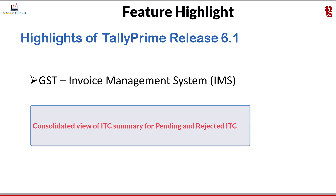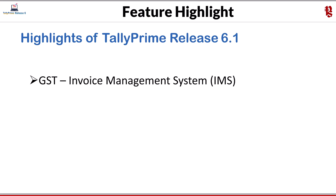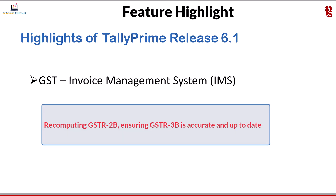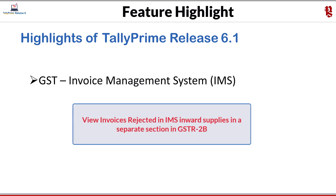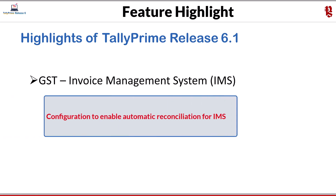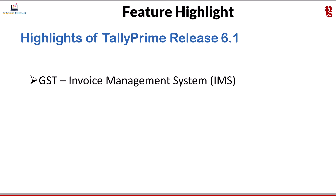A consolidated view of ITC summary is available for pending and rejected ITC. With IMS action, you can recompute your GSTR 2B, ensuring your GSTR 3B filing is accurate and up to date. You can view invoices rejected in IMS Inward Supplies in a separate section in GSTR 2B — these transactions are excluded from ITC. You also have configuration to enable automatic reconciliation for IMS, which will automatically mark reconciled vouchers as accepted without manually updating the status in IMS Inward Supplies.